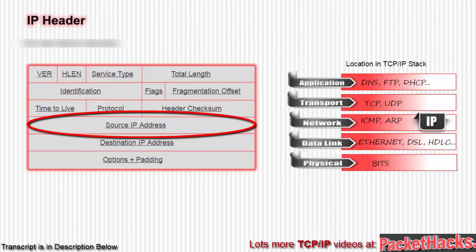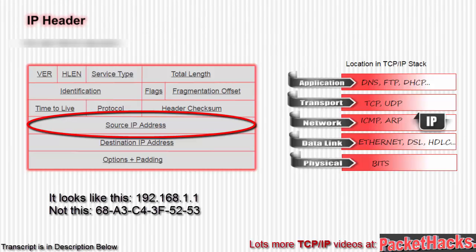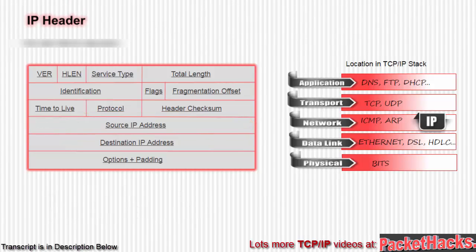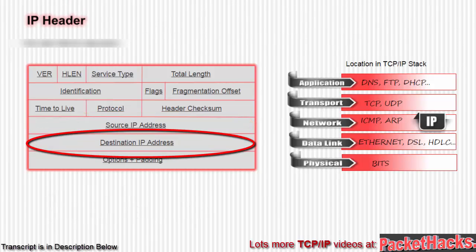The next field is the source IP address — which, in a stroke of genius, is the IP address of the source. It looks like 192.168.1.1, not a MAC address like 68-A3-C4-3F-52-53. Next is the destination IP address, also 32 bits, which should be self-explanatory after that brilliant explanation.